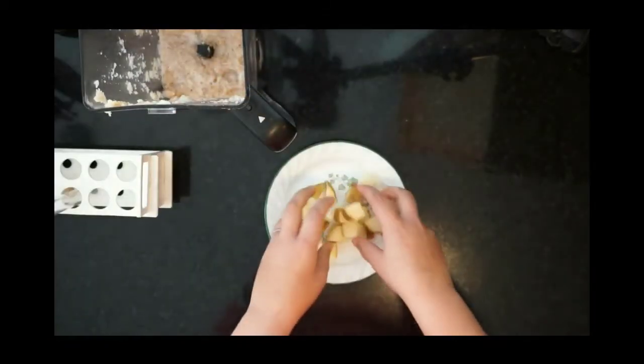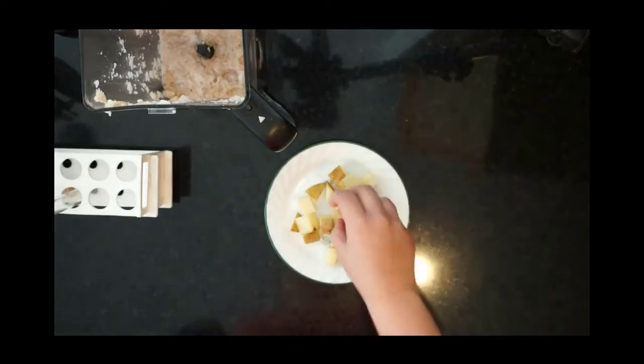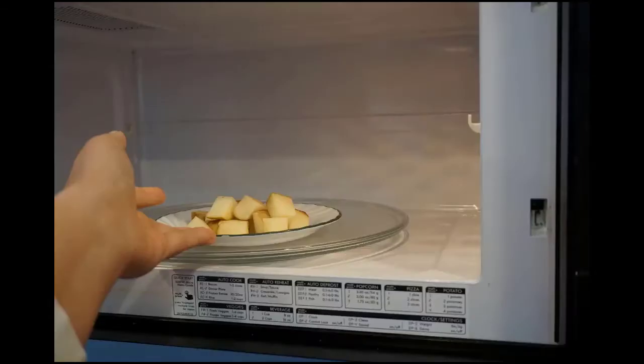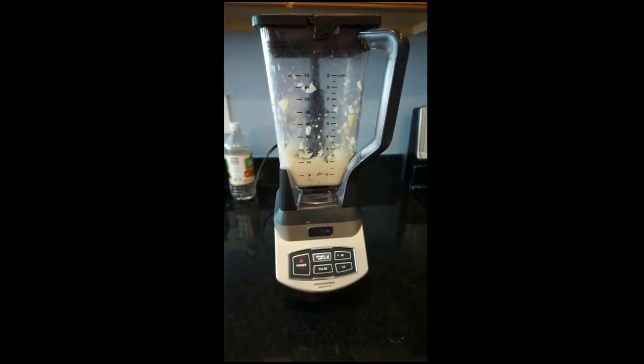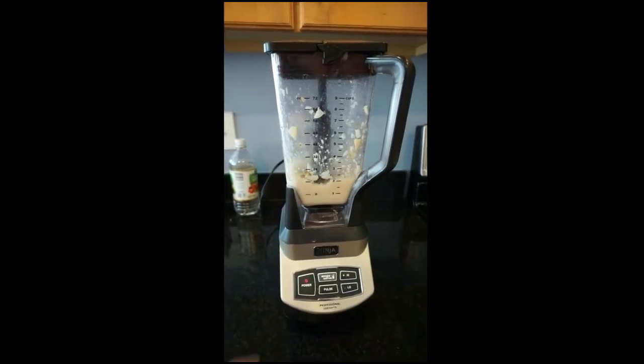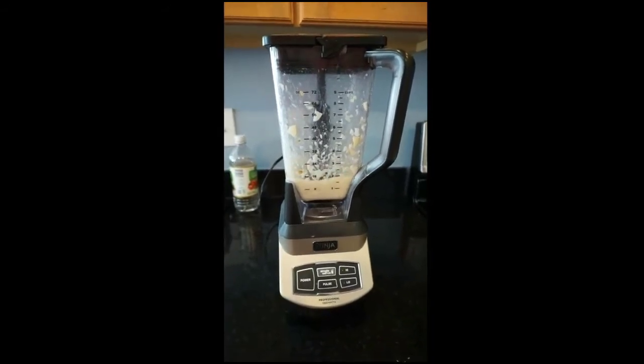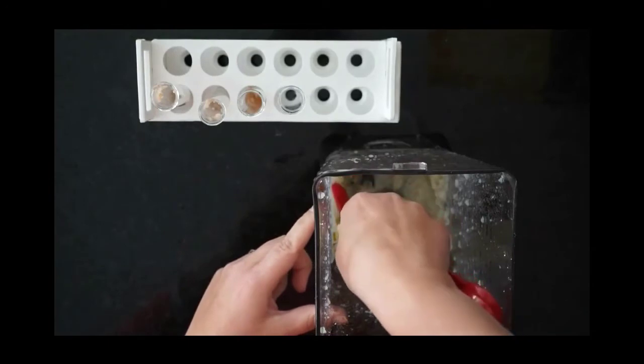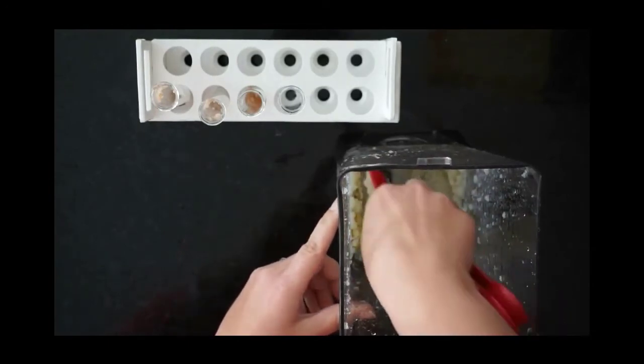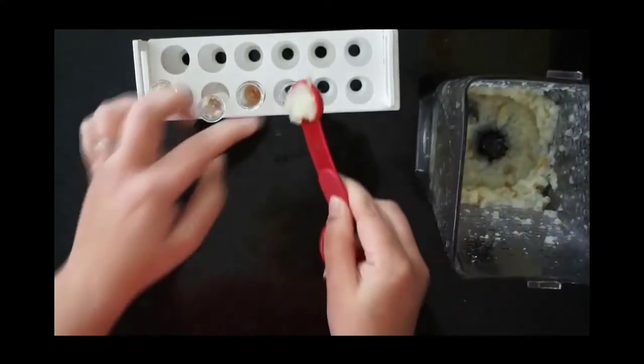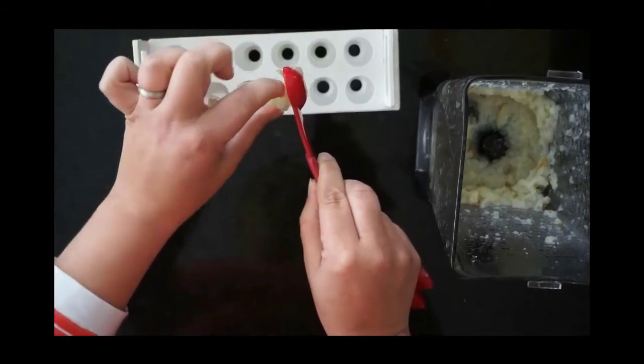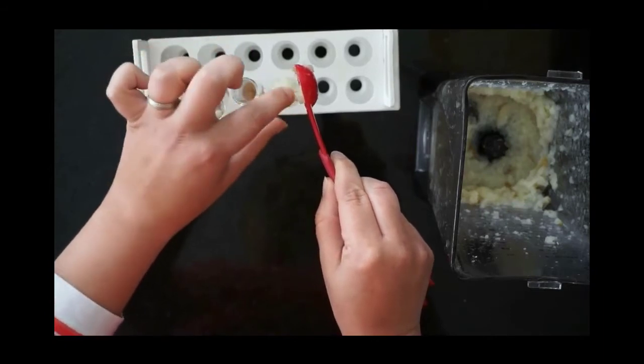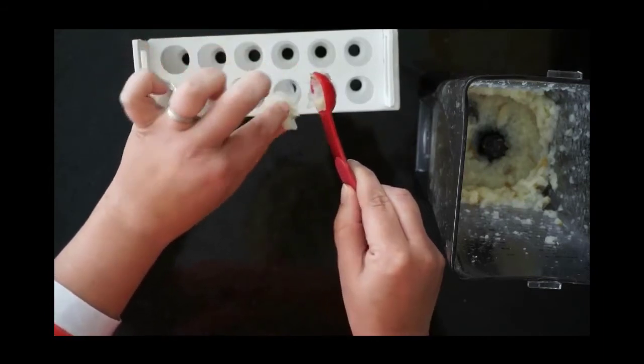Then you're going to put the other half of the potato cubes on a plate and microwave it for two to three minutes. Then blend the cooked potato and put it in tube number four or cup number four. Again, make sure that it ends up all the way on the bottom.